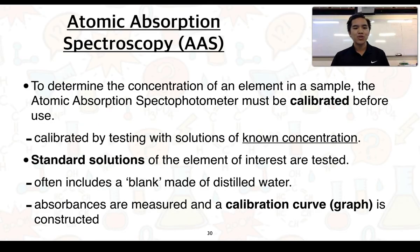If we want to determine the concentration of an element in a sample, the atomic absorption spectrometer or spectrophotometer must be calibrated before its use. To do so, we calibrate it by testing it with solutions of known concentration. In other words, we use standard solutions of the element of interest. This often includes a blank, which is just made up of distilled water, and this just confirms that there is no contamination of our water to prepare the solutions.